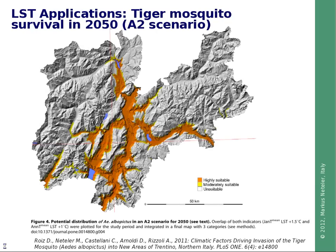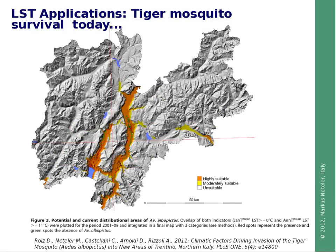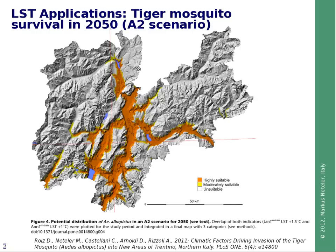We can also use these results to predict the future. This shows tiger mosquito survival in 2050 based on the IPCC A2 scenario — a January mean temperature increase of plus 1.5 degrees Celsius and an annual mean temperature increase of plus 1 degree Celsius. Integrated into a map, you can see that compared to the previous map, quite some further spread is possible.